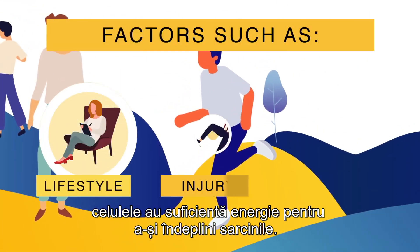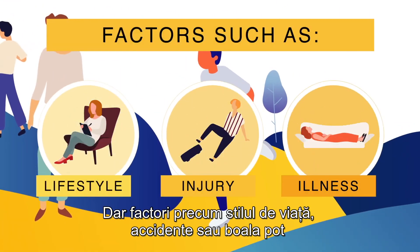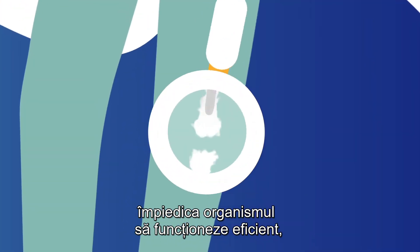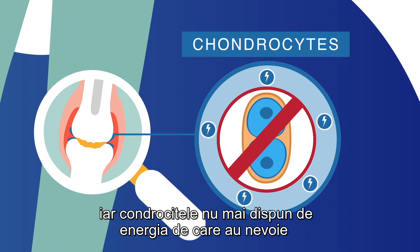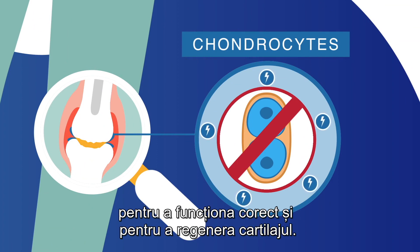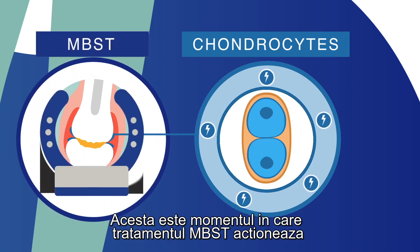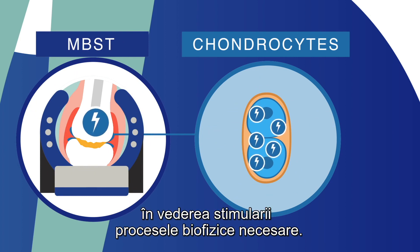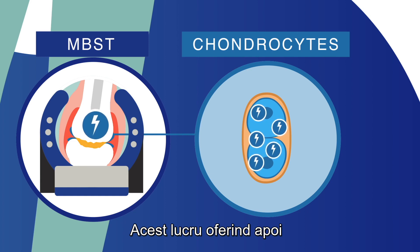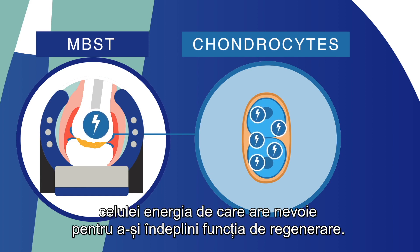But factors such as lifestyle, injury, or illness can prevent the body from working effectively, which denies the chondrocytes the energy they need to function properly and regenerate the cartilage. This is when MBST is applied to the cartilage tissue in the knee in order to stimulate the necessary biophysical processes. This then gives the cell the energy it needs to fulfill its regenerative function.